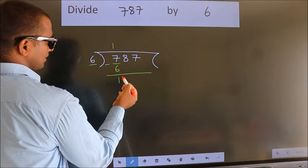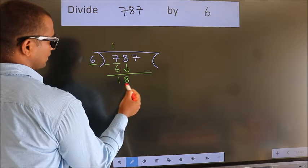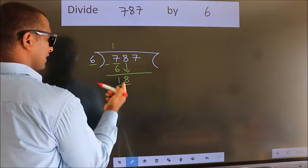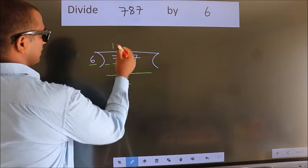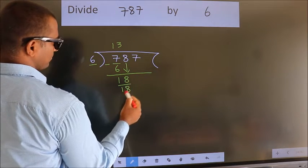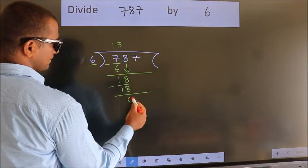After this, bring down the beside number. So, 8 down. So, 18. When do we get 18? In 6 table, 6 times 3 is 18. Now, we subtract. We get 0.